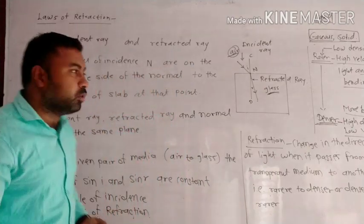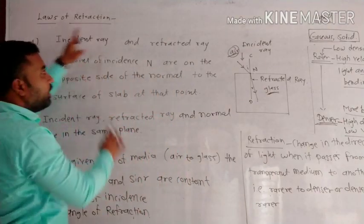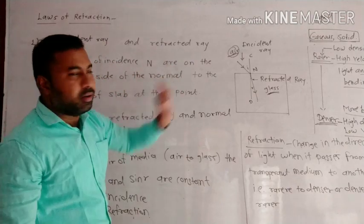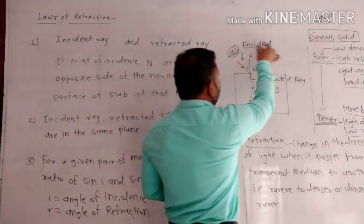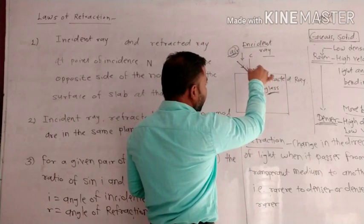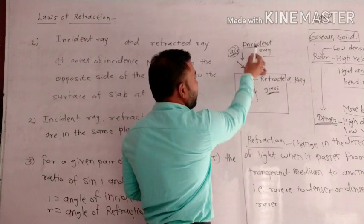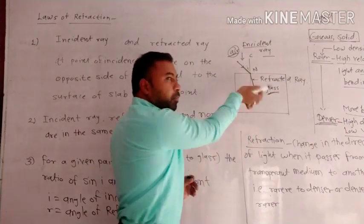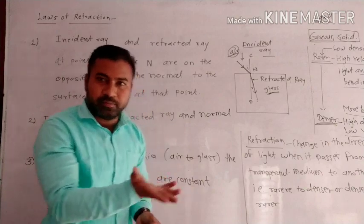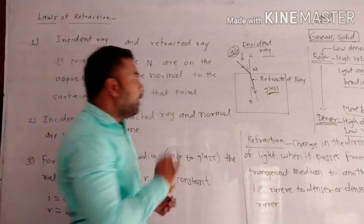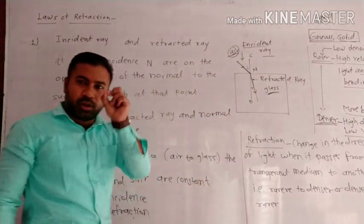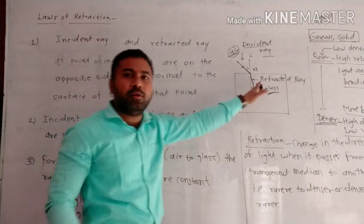The first law: the incident ray and the refracted ray, at the point of incidence, are on the opposite sides of the normal. The incident ray is on one side of the normal, and the refracted ray is on the other side of the normal. The normal is perpendicular to the glass surface, or to any type of medium boundary.